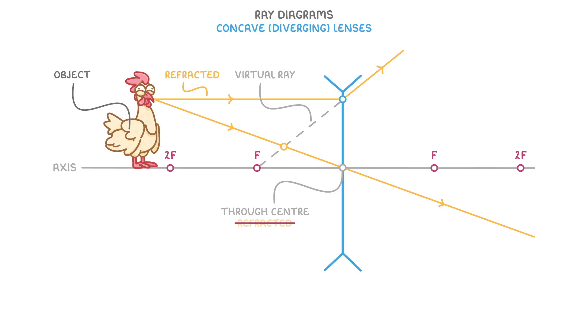But as a shortcut, if the bottom of the object is on the axis, like ours is, then the bottom of the image will also be on the axis. So there's no need for us to repeat everything. We know that the image is going to be here.